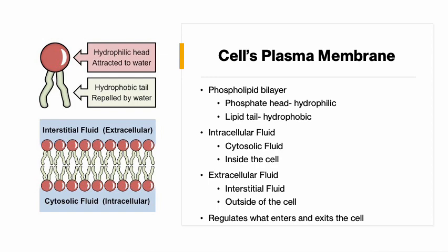Because the tails of the membrane are hydrophobic, when water is on the inside and the outside, it causes the tails to turn inward onto each other so they're not touching the water. The bilayer is always assembled with the phosphate head to the outside and the tail to the inside, because the tails are always trying to get away from the water. The cell's plasma membrane regulates what goes in and out of the cell based on what the cell needs.